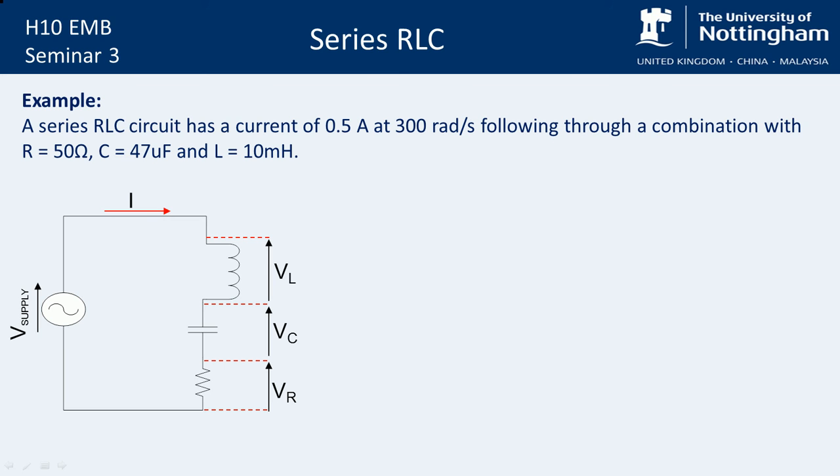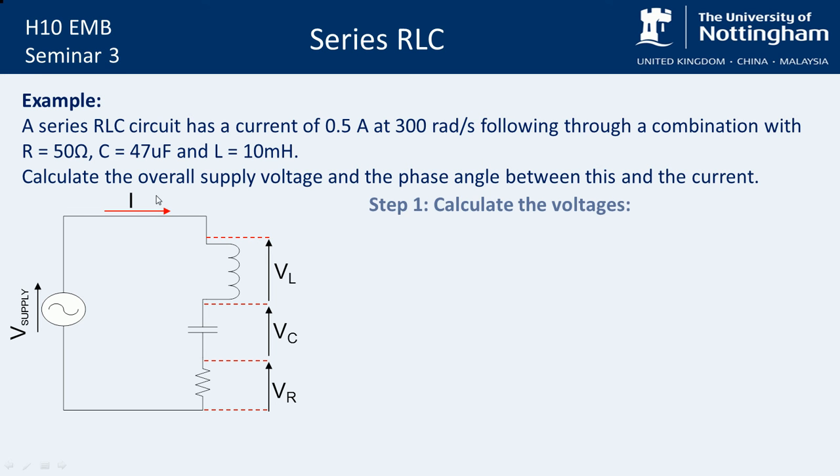So we've got this very familiar setup where we've got a series circuit with an inductor, a capacitor and a resistor supplied by an AC supply. We can see that the current is common and flows through all of these components. It's a series circuit and we've often been asked to calculate the voltage drop across each of these components. What we've done so far is these types of questions where we've got what the current is. But we know that step one, we're going to just calculate these voltages.